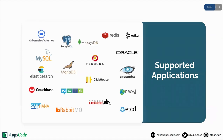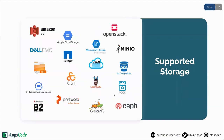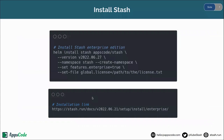Let's take a look at the supported applications by Stash. You can take backup of Kubernetes volumes and various databases including PostgreSQL, MongoDB, Redis, and many more. These are the supported platforms — you can deploy Stash in any Kubernetes cluster like GKE, Amazon EKS, Rancher, DigitalOcean, etc. For supported storages, you can store your backup data in any S3-compatible storage, Google Cloud Storage, Microsoft Azure Storage, etc. You can also store backup data in a Network File System (NFS). You can install Stash using the Helm command.